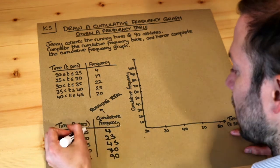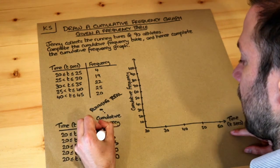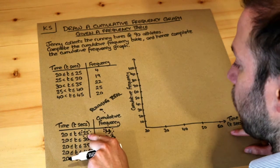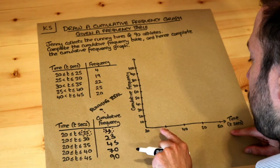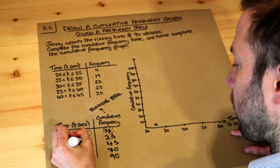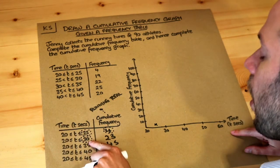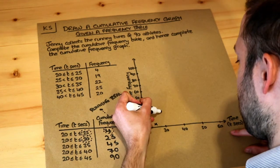So remember we take the end value and plot that with the cumulative frequency so we've got four people with a time of up to 25 so 25, 4, and then we have 23 people with a time of up to 30 so 30, 23, it's going to be roughly here.